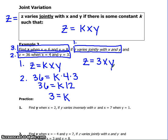Last step, let's answer the question that was given at the beginning of the problem. Find Z when X equals 6 and Y equals 8. Z equals 3 times X times Y. Simplifying 3 times 6 times 8, we get that Z equals 144.